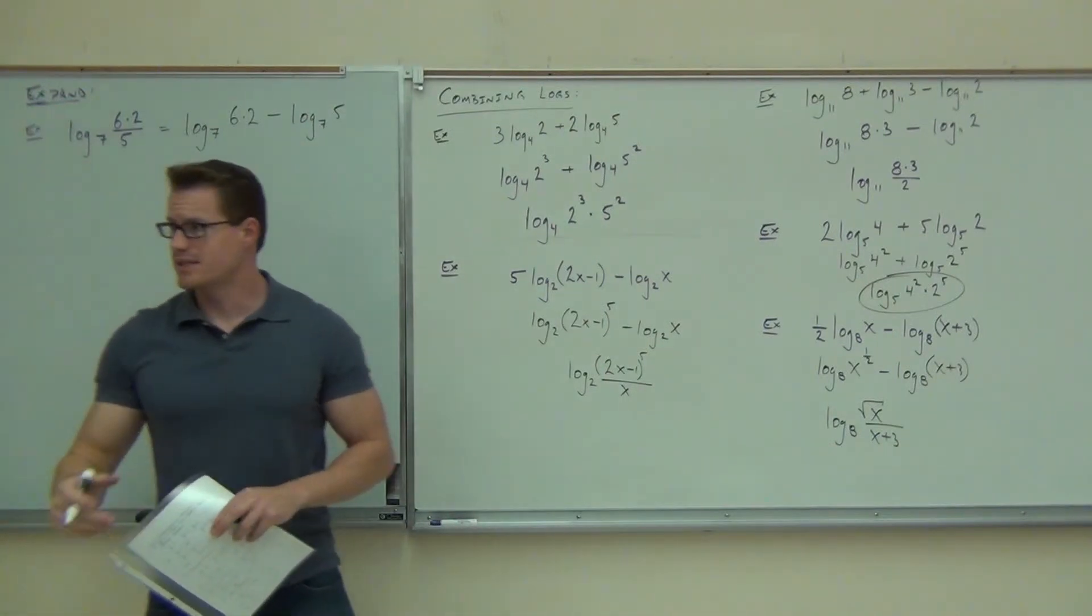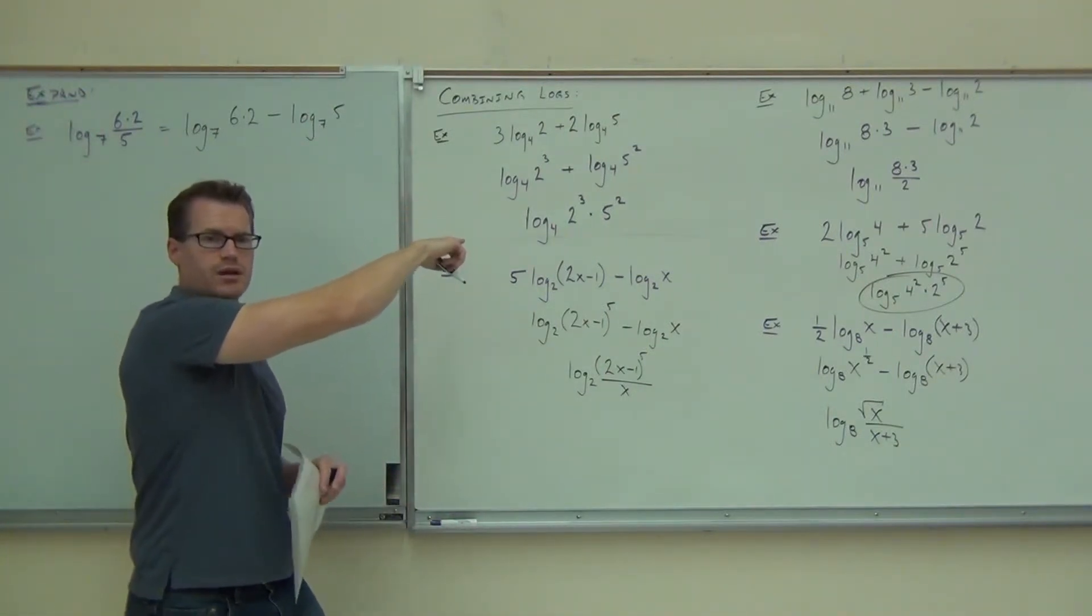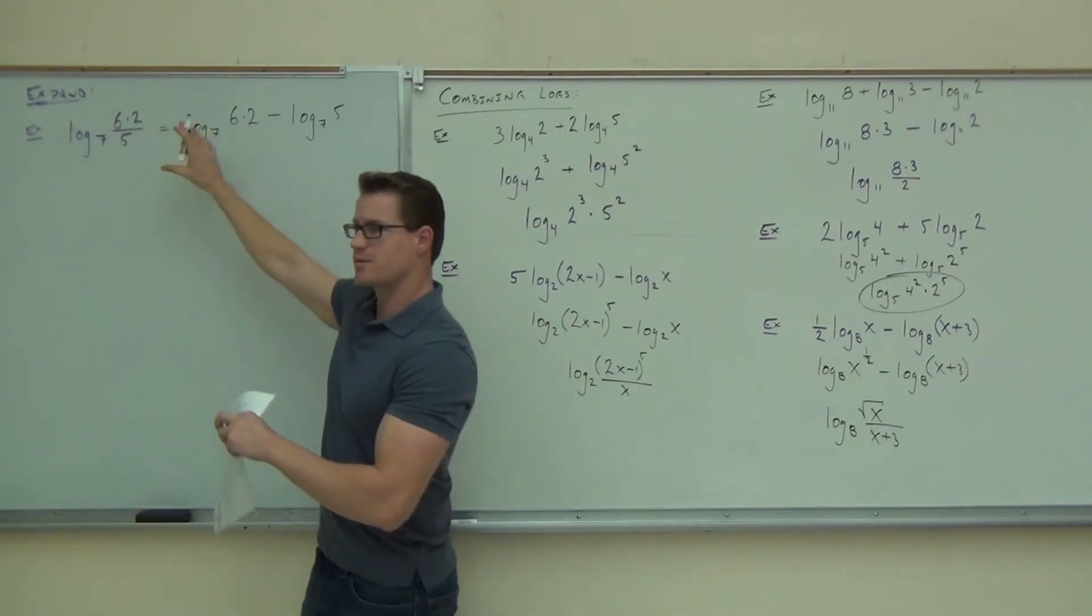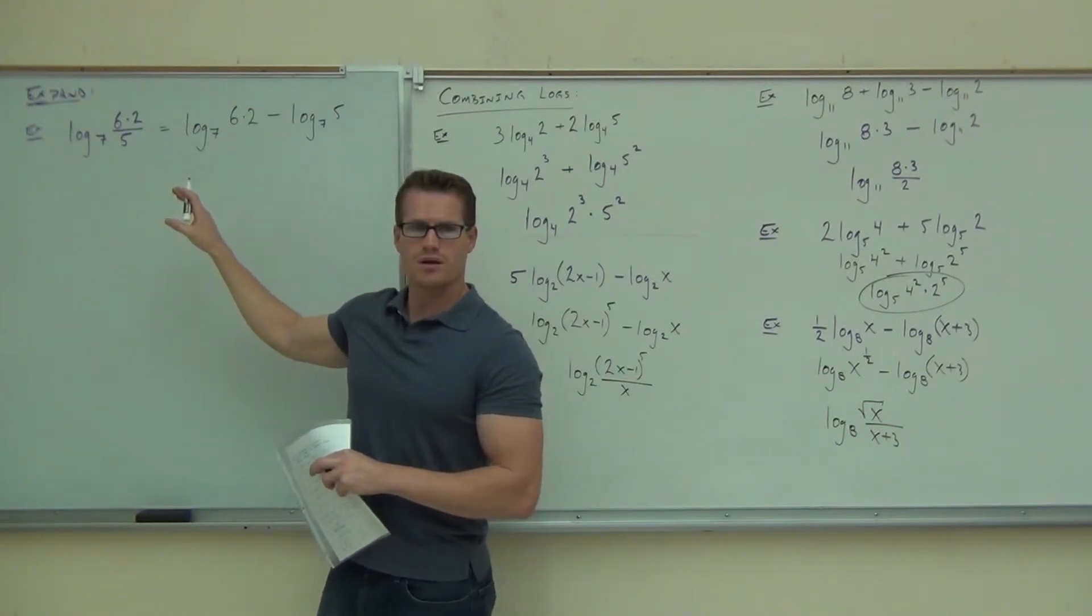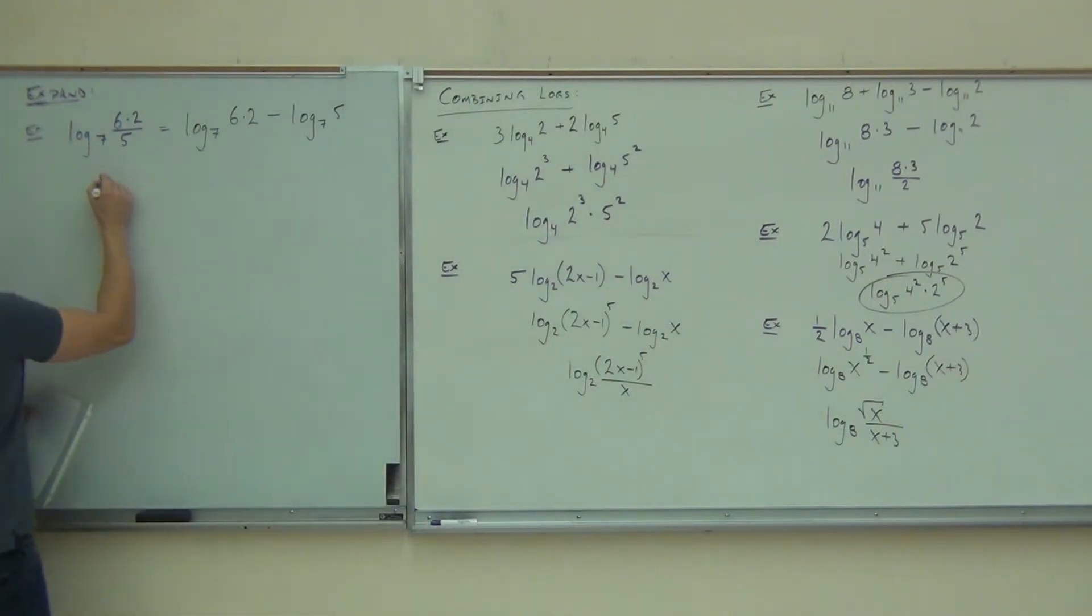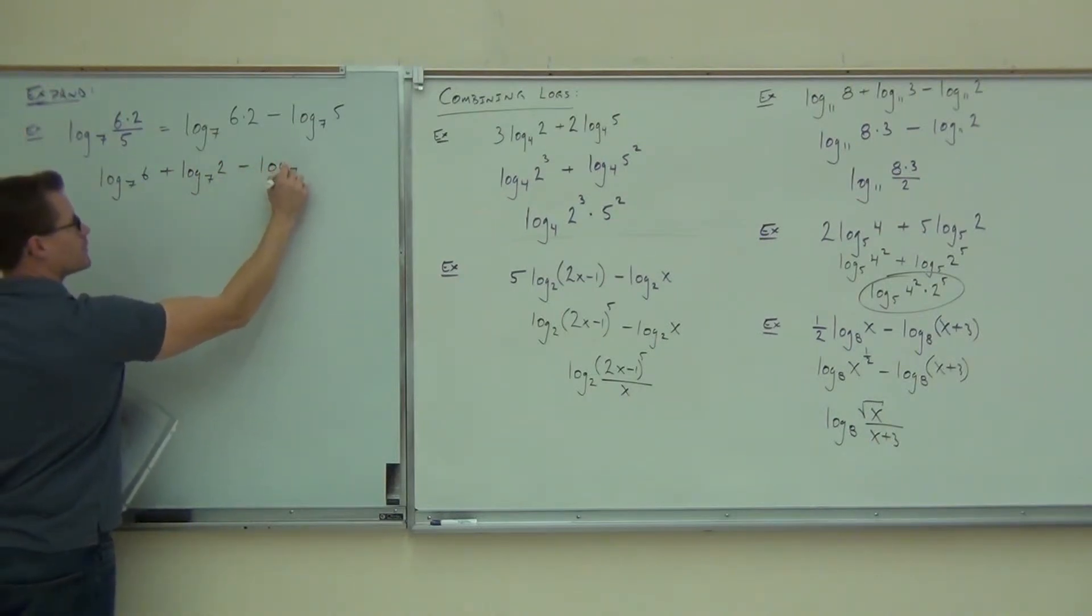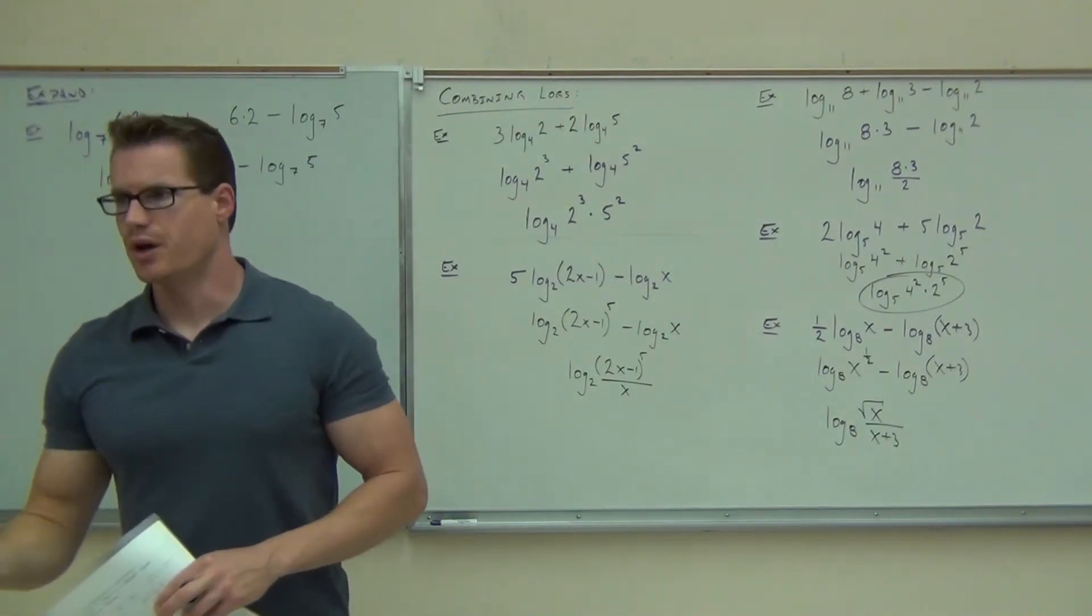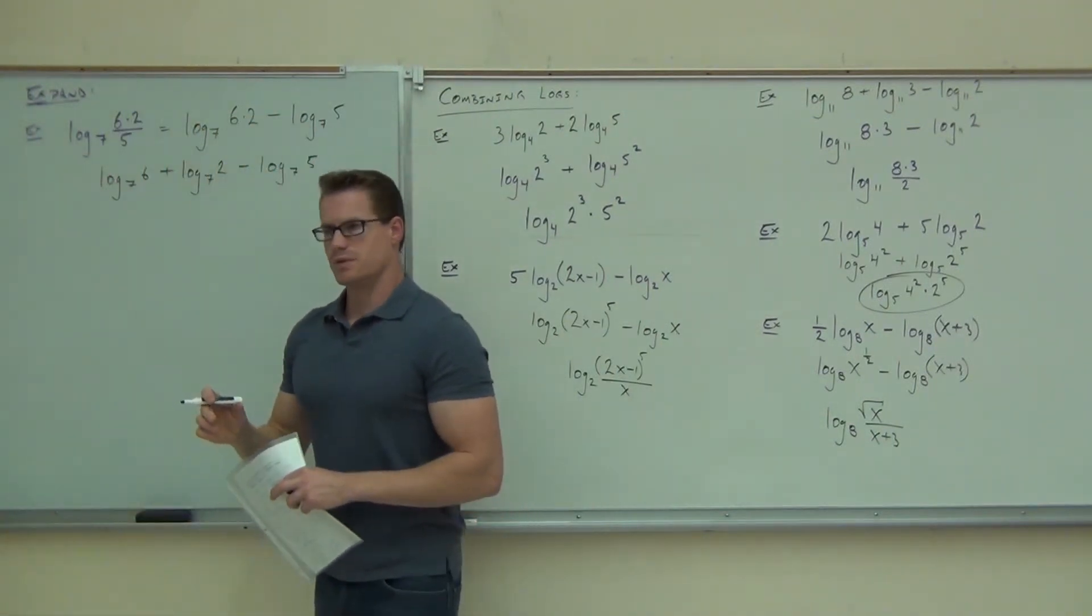That's how you put it together, right? That's how we did that example right over there. We put it together as log base 7 of 6 times 2 over 5. So that's how we split up by that subtraction. Are you guys okay with that so far? Now, is there anything else we can do? Yes. So that's 6 times 2. We definitely can do that. So all in all, this is going to be log base 7 of 6. What now? Plus log base 7. That's as far as you could go. You got all right with that?